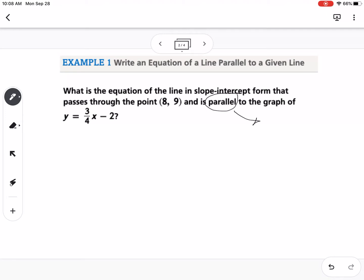So first thing we need to learn is that parallel lines have the same slope. So the reason they give us the equation right here is so that we can find the slope. So we know the slope of this line is 3/4. So the slope of our new line is also going to be 3/4.